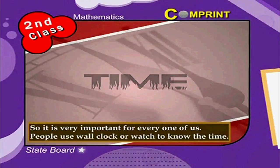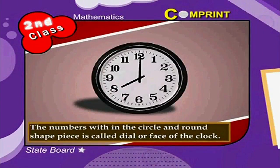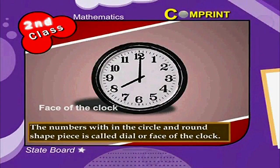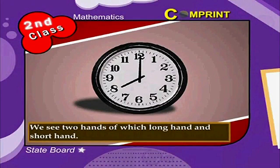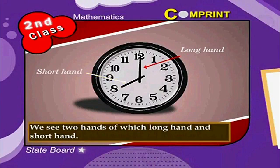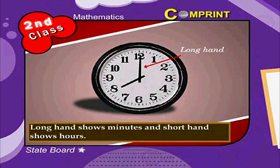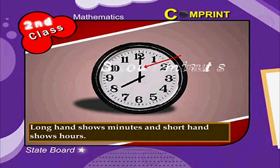Have a look at the clock. The numbers within the circle on the round-shaped piece is called the dial or face of the clock. We see two hands — the long hand and the short hand.